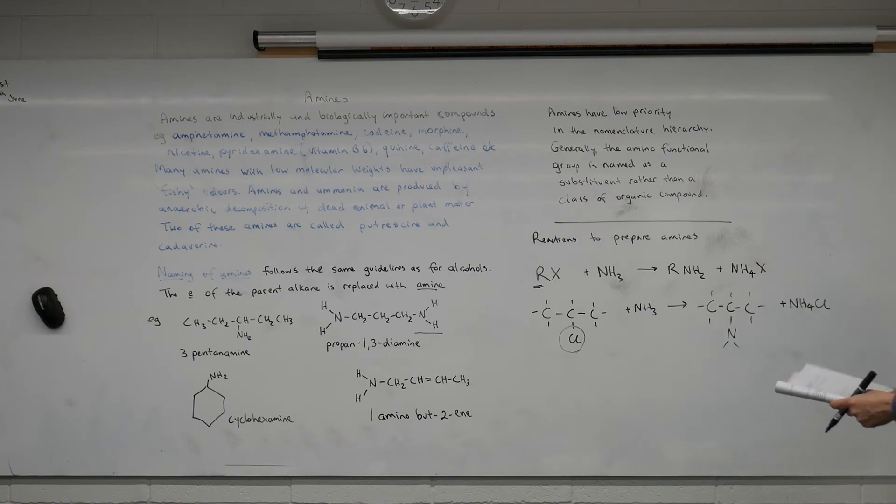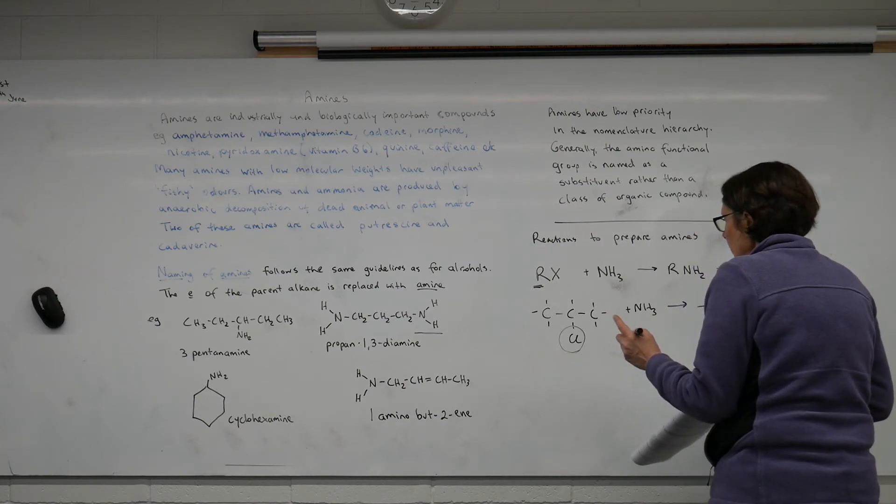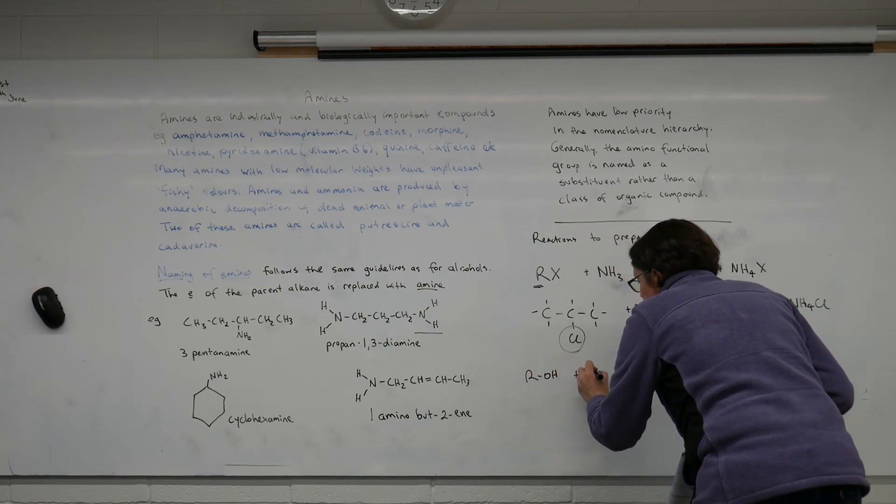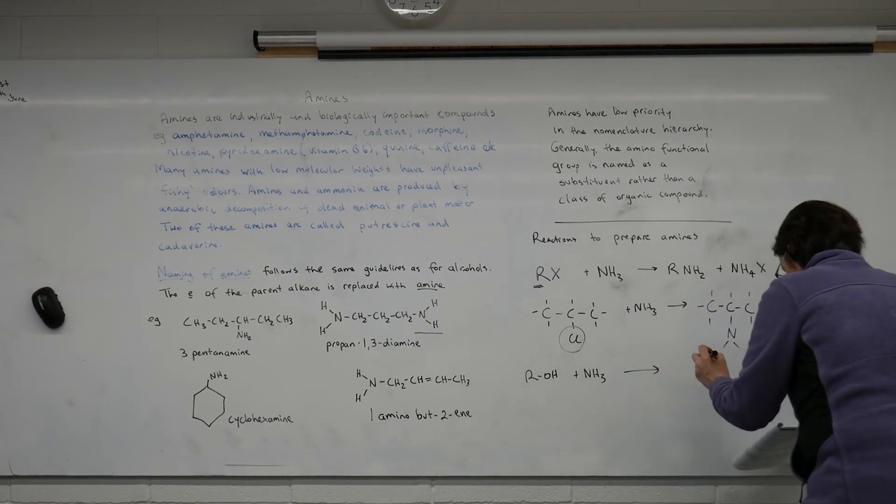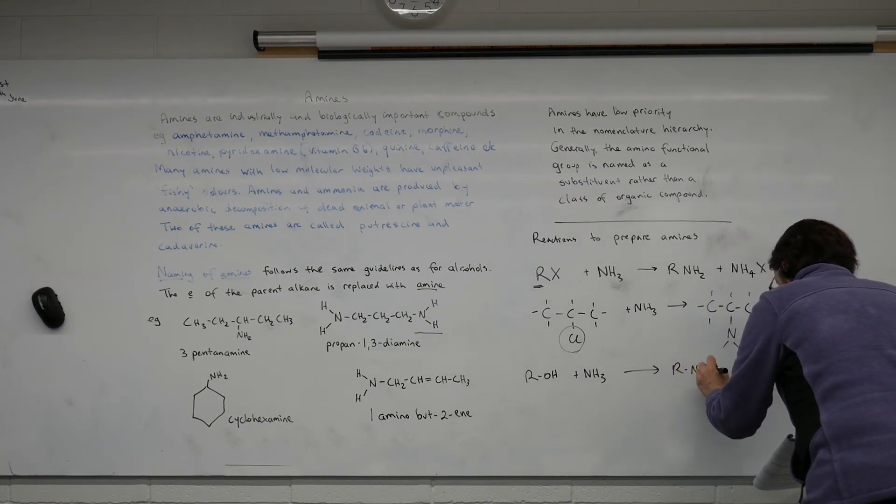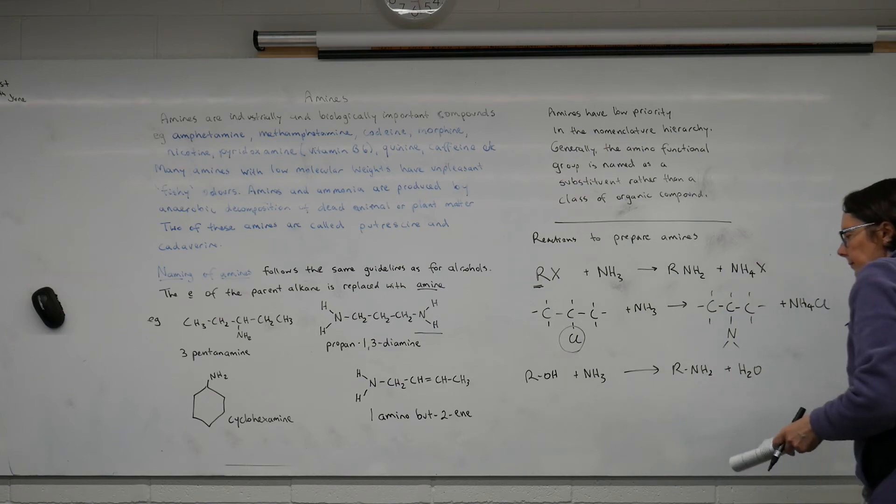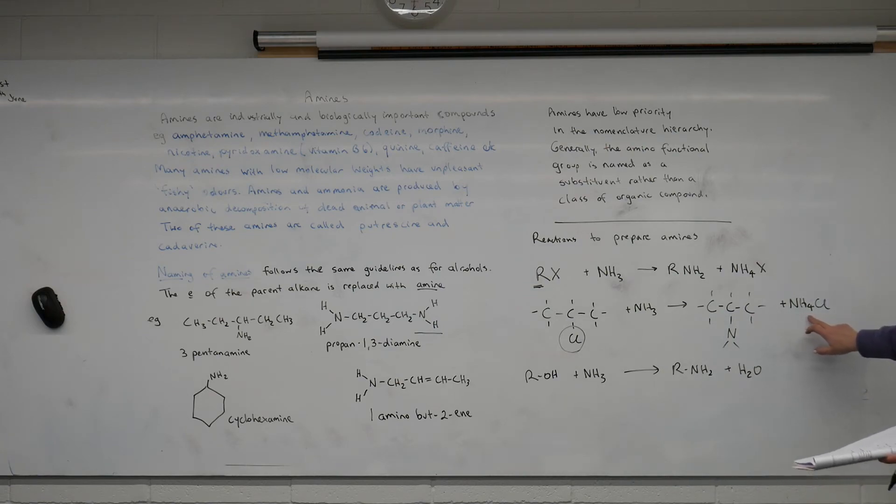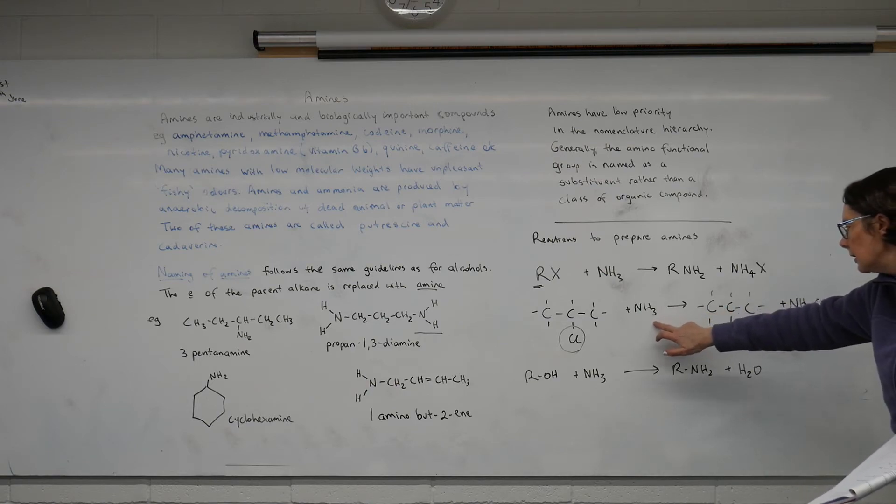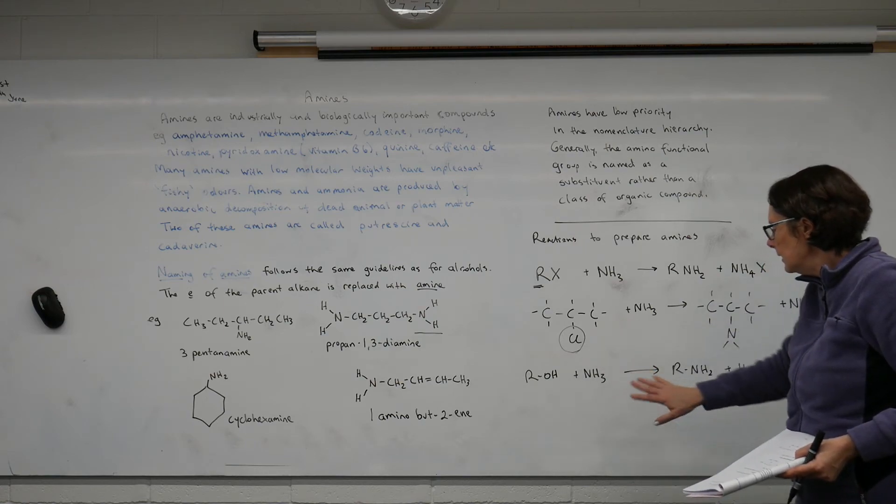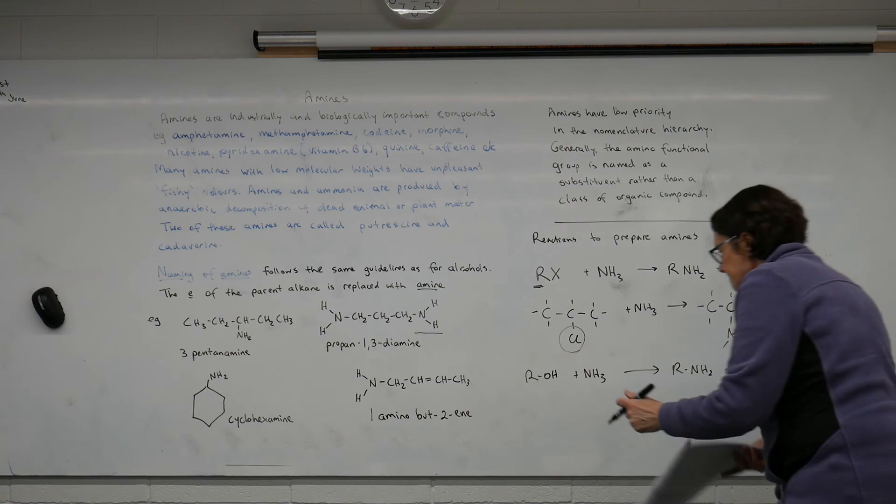And the second way we can look at here is a reaction of an alcohol with ammonia. So both of these are reacting with ammonia. This time our other product is water. So we've got a hydrogen off the ammonia here that has joined onto the chlorine that we removed from the alkyl halide. The same thing is going to happen for the water.